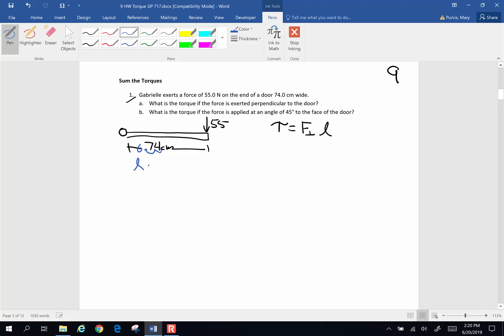So the lever arm, or the distance from where the force is applied until the pivot, and the pivot is going to be that hinge of that door, is going to be 0.74 meters.